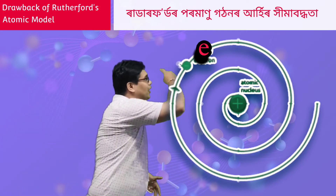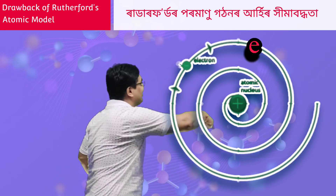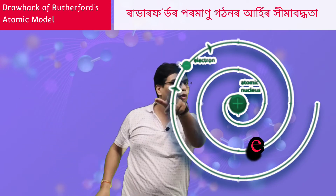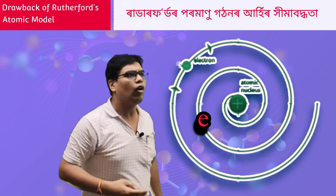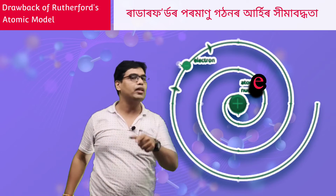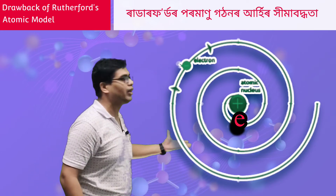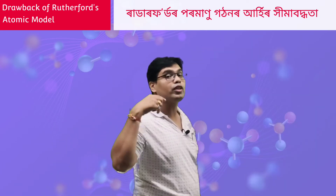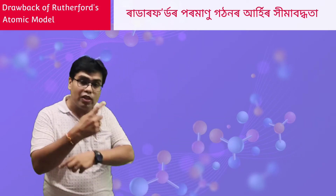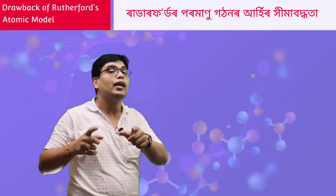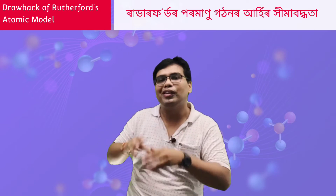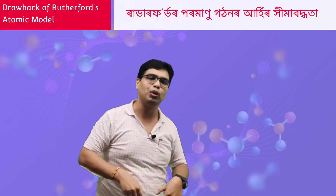That means the electron revolving around the nucleus loses energy. If it loses energy continuously, eventually the electron spirals into the nucleus. So the atom would cease to exist — there would be no atoms. This is a lot of damage to the Rutherford model, because the nucleus situation leads to electromagnetic radiation being emitted continuously.